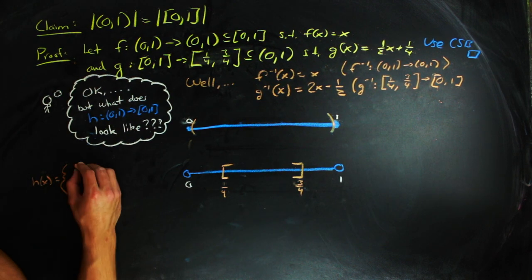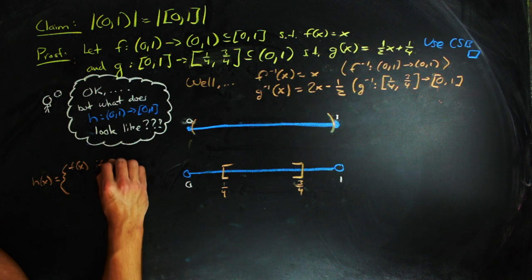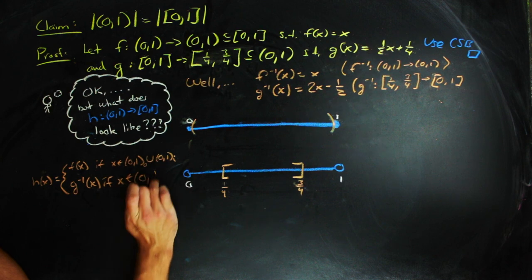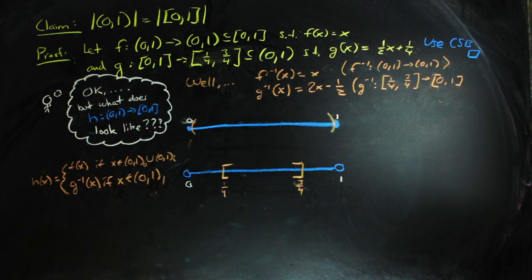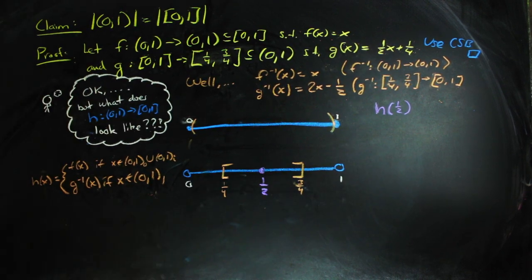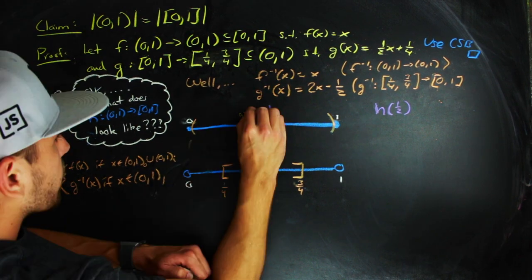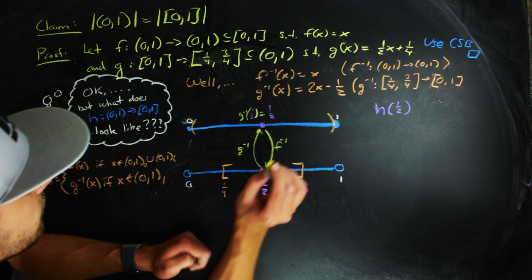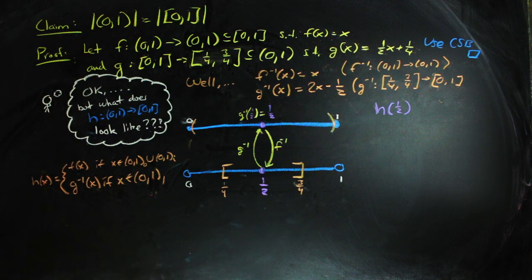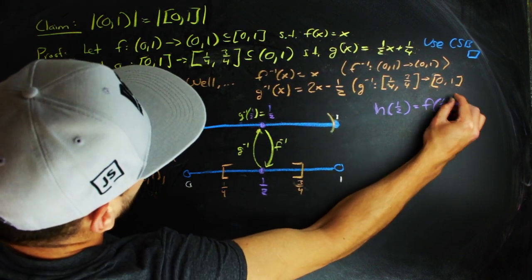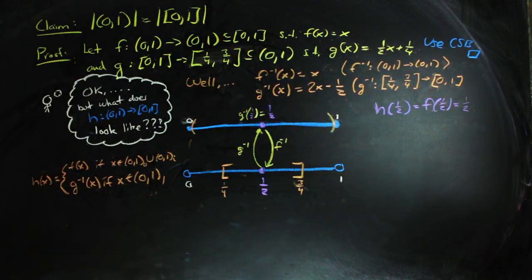Now, by construction, H is equal to F when we have even or infinitely many ancestors, or G inverse when we have an odd number. So let's look at a couple points. Take, for example, X equals a half in the open interval of A. Notice that G inverse of X is also one half, and so is F inverse of G inverse of X. This actually continues on forever. So X has infinitely many ancestors, and thus H of X is equal to F of X, which is equal to 0.5.